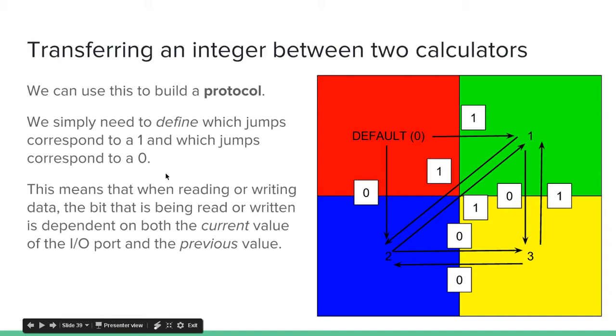We can use this to build a protocol. We simply need to define which jumps correspond to a 1 and which jumps correspond to a 0. This means that when reading or writing data, the bit that is being read or written is dependent on both the current value and the previous value of the I/O port.